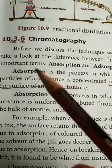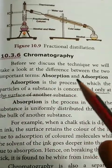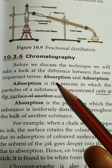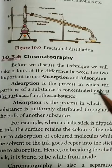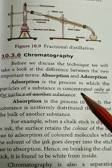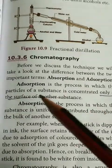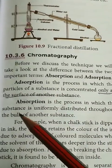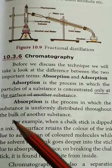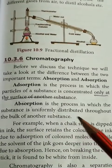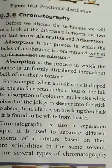Next, let us see chromatography. Before we discuss the technique, we will look at the difference between two important terms: adsorption and absorption. Adsorption is the process in which the particles of a substance are concentrated only at the surface of another substance. Absorption is the process in which the substance is uniformly distributed throughout the bulk of another substance.